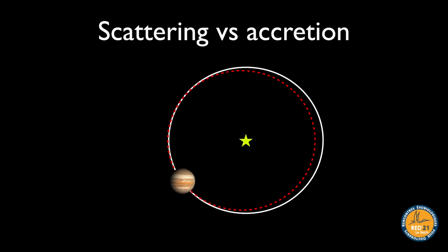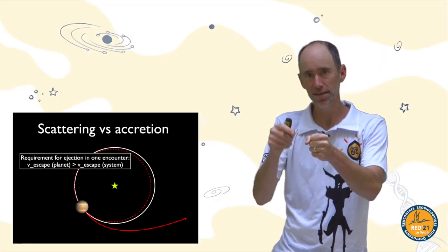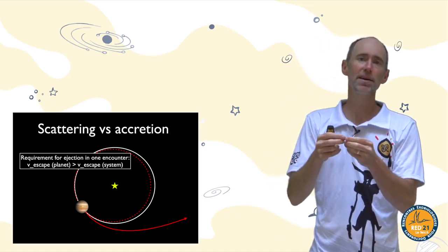When does scattering win versus accretion? When the growing Earth had its orbit crossed by a large embryo, it usually ended in a collision. When two gas giants have crossing orbits, it usually ends in scattering. There's a simple way to think about this: if a planet wants to eject something, it does so with gravity. The strongest speed it can give an object is the escape speed from the planet's surface. Compare that to the escape speed from the whole system at that distance from the star.